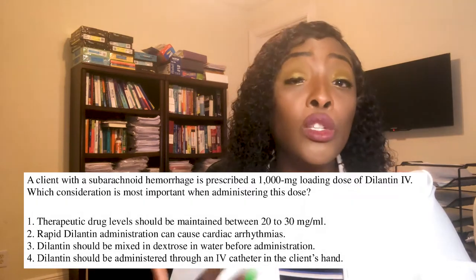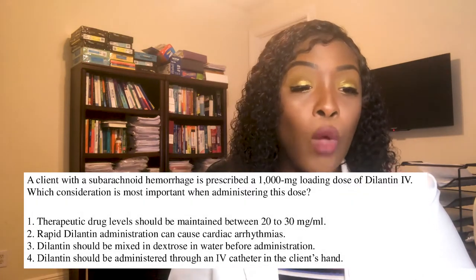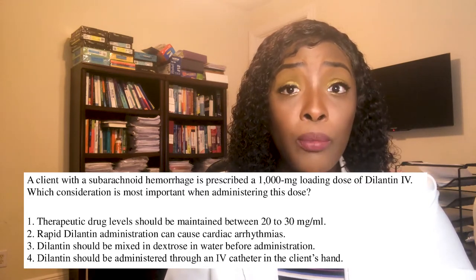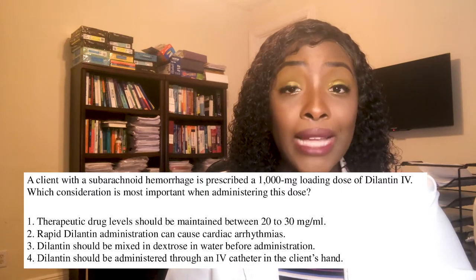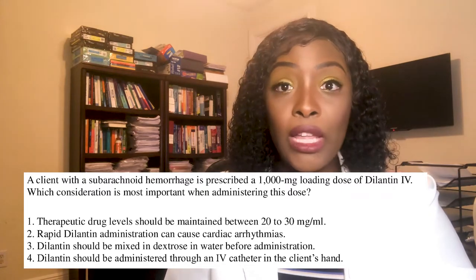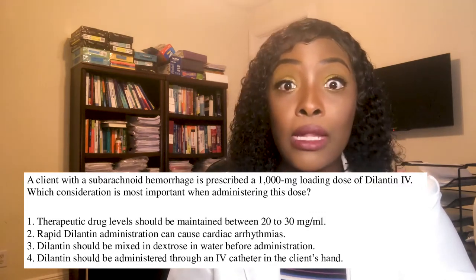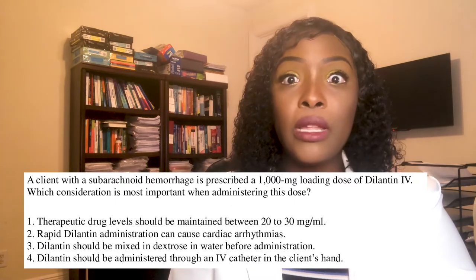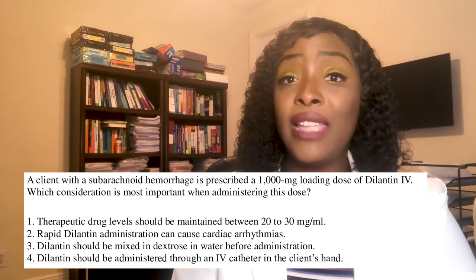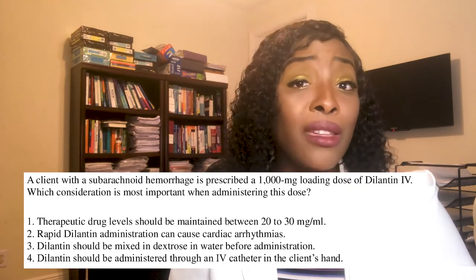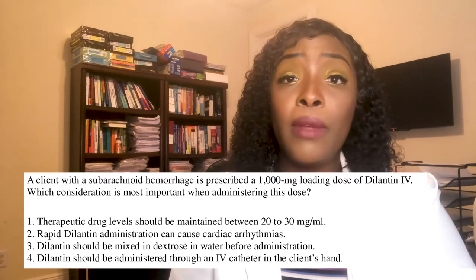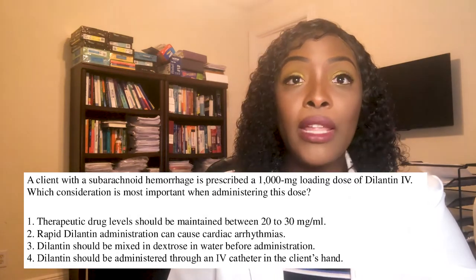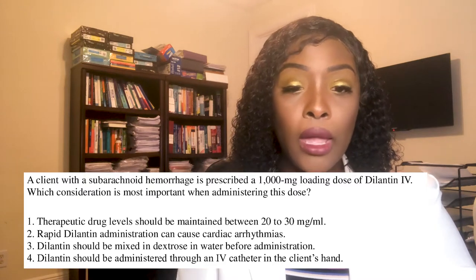Choice one says the therapeutic level should be maintained between 20 and 30 — no. The therapeutic range for Dilantin is 10 to 20, and you absolutely must know that range. If the patient's blood level is less than 10, they're getting a sub-therapeutic level and are at risk for possible seizures. If it's more than 20, they're getting a toxic level.